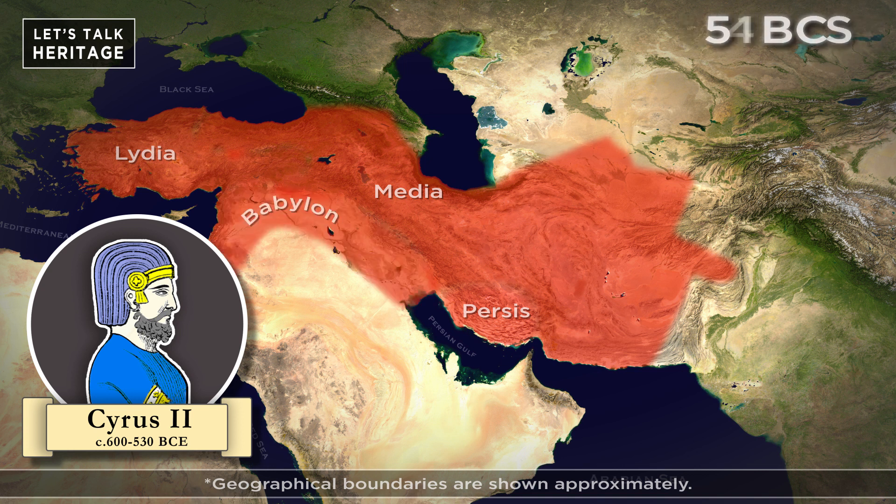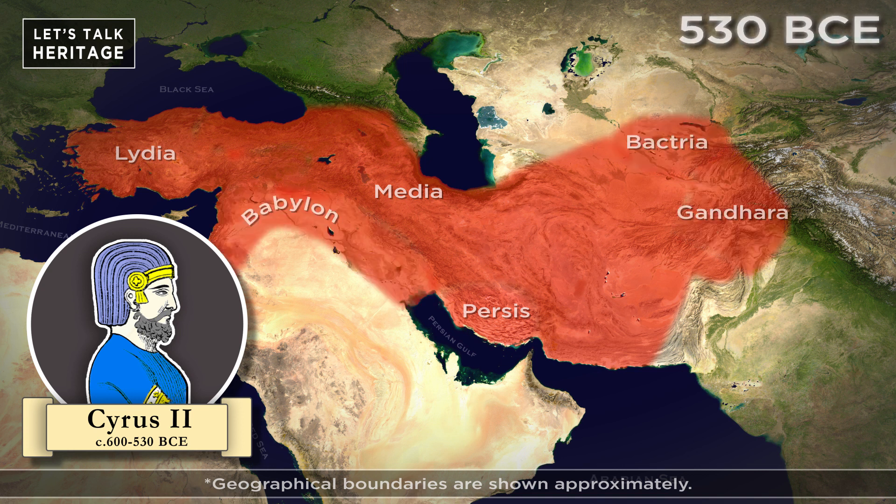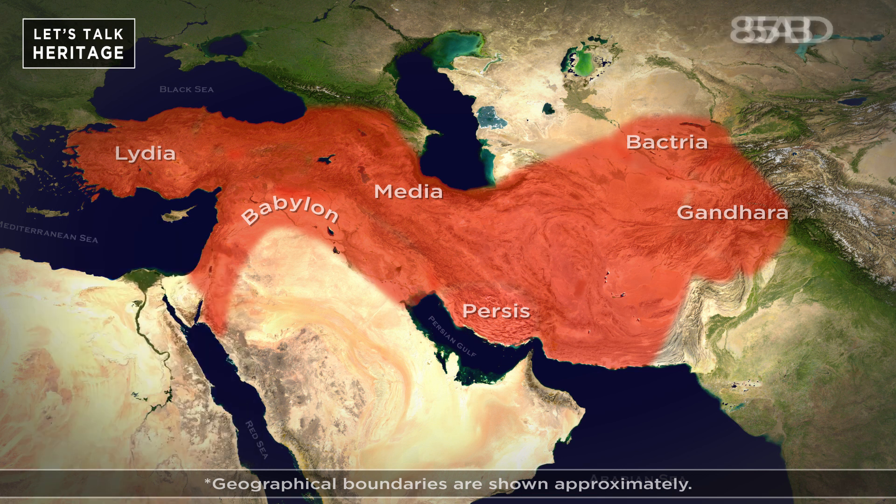He then also defeated Bactria and Gandhar. This was the beginning of the Achaemenid Persian Empire.